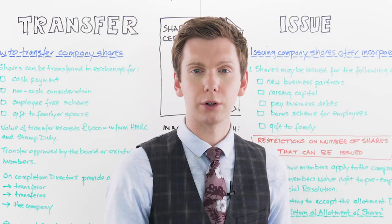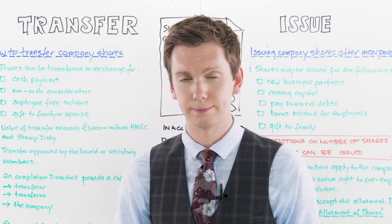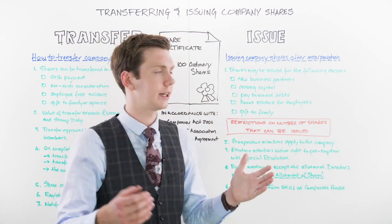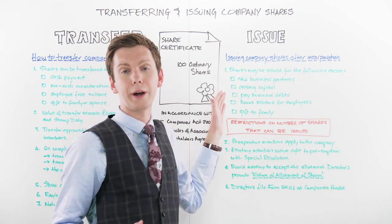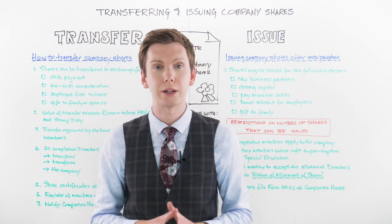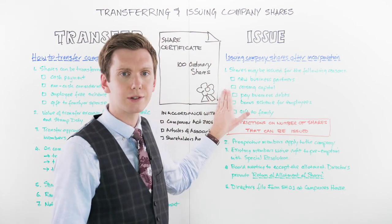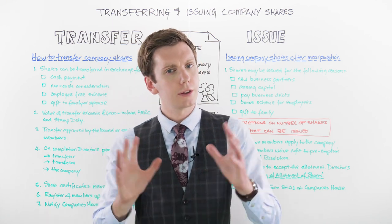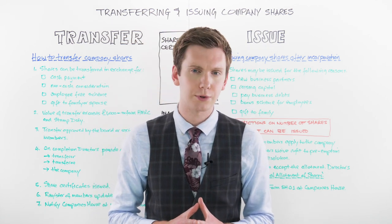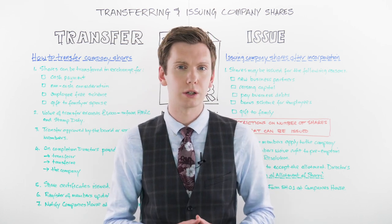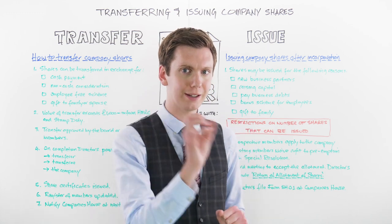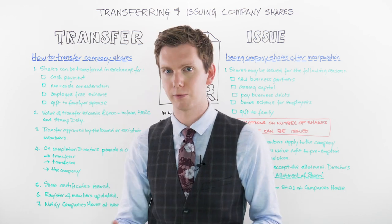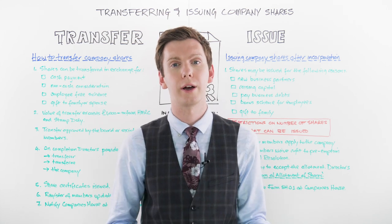Next, let's take a look at the process of issuing company shares following incorporation. Companies may need to issue new shares for a number of reasons, including bringing in a new business partner, raising additional capital through outside investors to fund expansion or pay for a new project, paying off business debts, issuing shares as part of a bonus scheme for employees, or providing a gift to family members. The Companies Act doesn't impose legal restrictions on the number of shares a private company can issue, but restrictions can be included within the articles and shareholder agreements, such as authorised share capital, preemption rights, and directors' powers to authorise allotments.